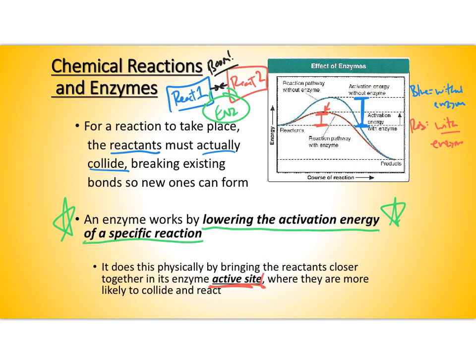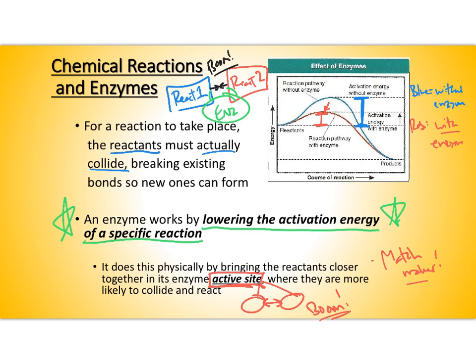An enzyme has a binding location called an active site, and the active site basically grabs your two reactants and helps bring them together so they will actually collide. I think of an enzyme like a matchmaker — you find your best friend and a cute guy, and you don't just suggest they meet, you physically bring them together. You're enzyming — making it more likely that those two people are going to collide with each other and come together.